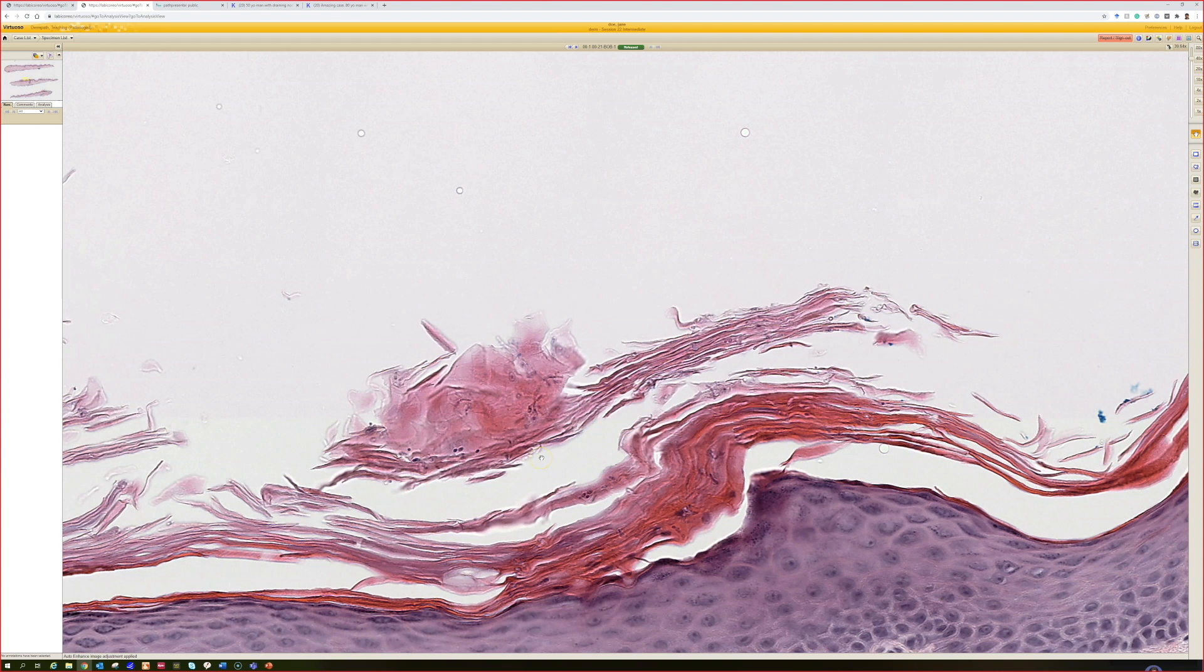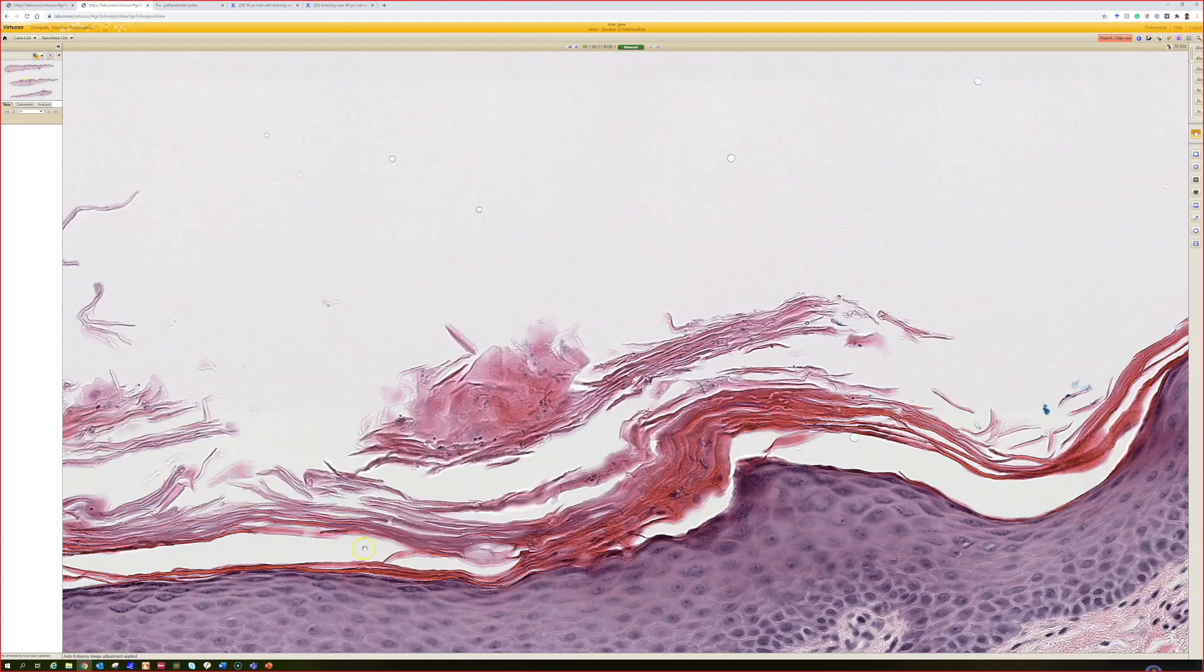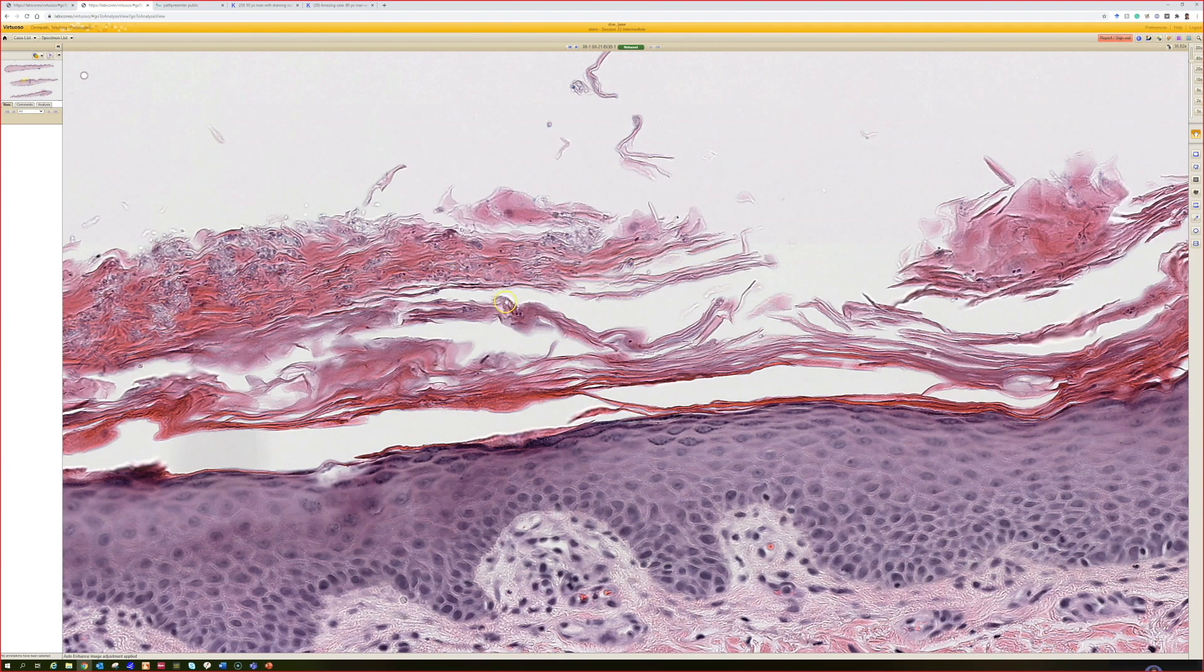The spaghetti meatball appearance is best seen actually on a skin-scraping KOH preparation, but you can sometimes see it in areas where you get thicker keratin because the keratin kind of comes loose and flips, and then basically what we're seeing there is the equivalent of what you would look at on a KOH preparation, and you can see little hyphal structures and the little yeast forms. And I feel like you guys recognize this clinically and don't usually biopsy it.